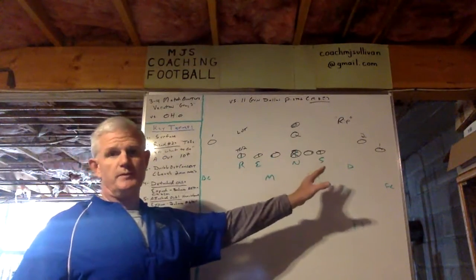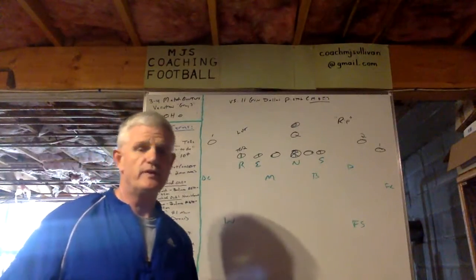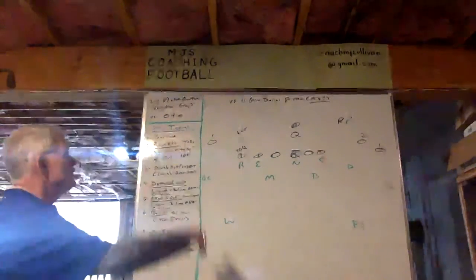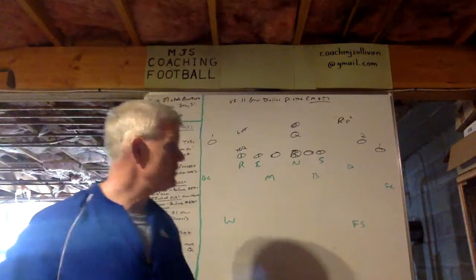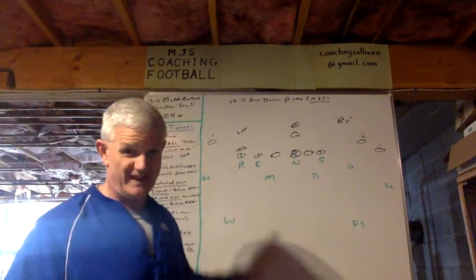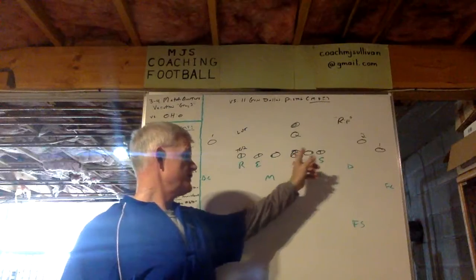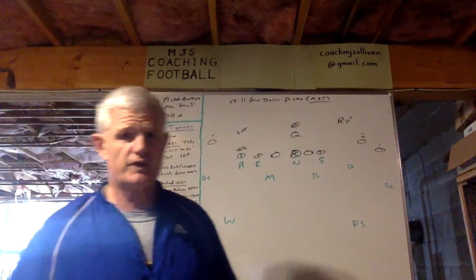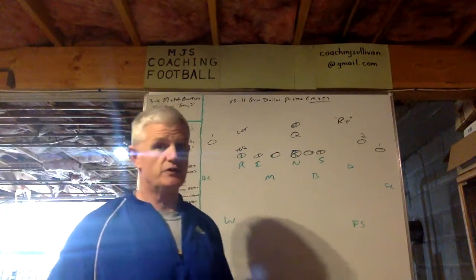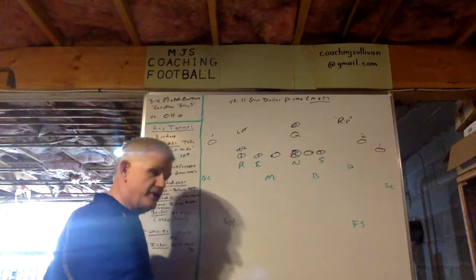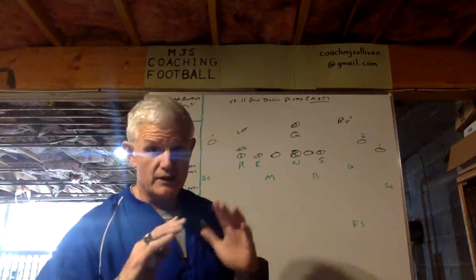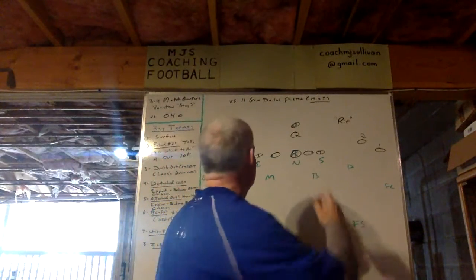Over here are the key terms, and I'm going to take those key terms and bring them to life in the diagram to show you how we defend against this two-man route concept — again, Double Out, we call Ohio. The first key term is 'surface.' To us, the surface is the offensive line, and when there's a tight end, the tight end becomes part of the surface on that side. It gives you run, pass, and direction. All of our defenders are reading that surface.